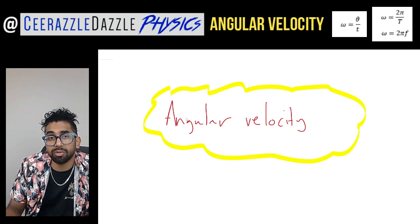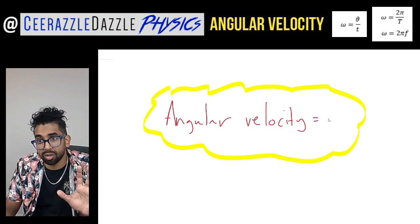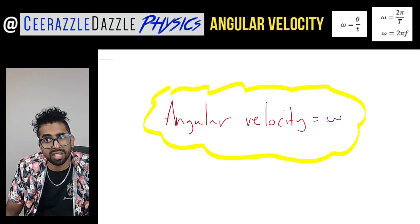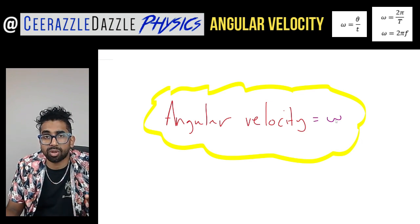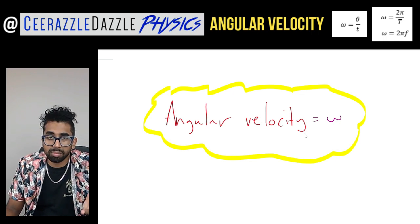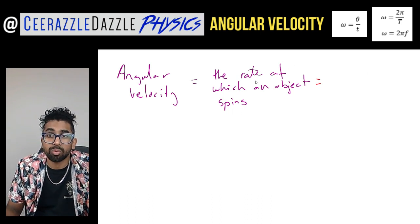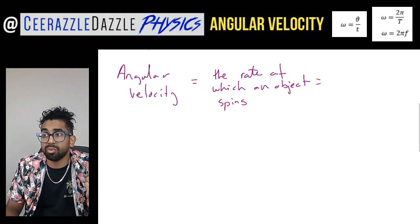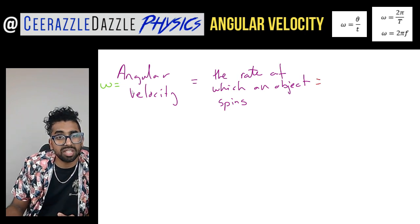The symbol for angular velocity is going to be lowercase omega — it's not w, it's lowercase omega. So that is the symbol for angular velocity. The angular velocity simply means the rate at which an object spins. So omega is equal to the angular velocity, meaning the rate at which an object spins.